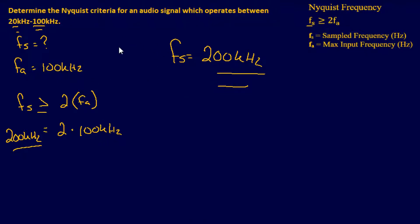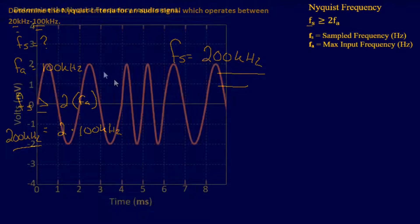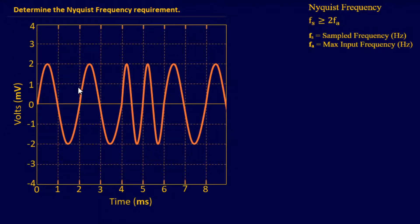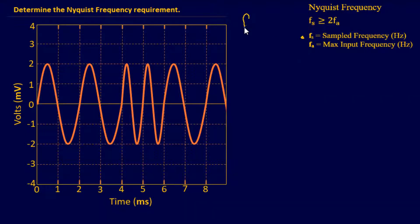Now that we've got our feet wet, let's do another problem. For our second example, this one has a little bit more illustrations to work with. We're going to determine the Nyquist frequency requirement, which is the same as finding the Nyquist criteria. Same as before, we're going to write down what we know and what we're trying to find — the sampling frequency, f of s.